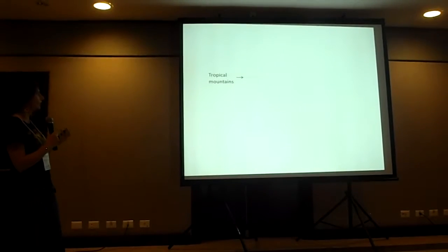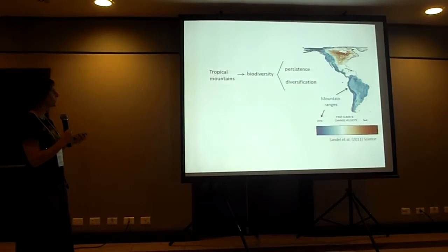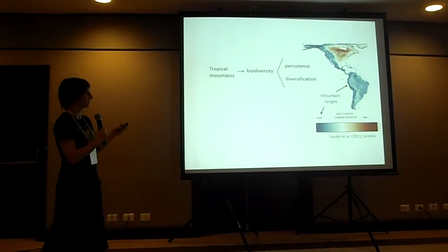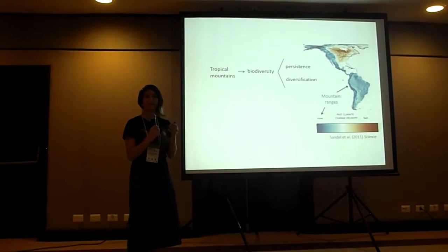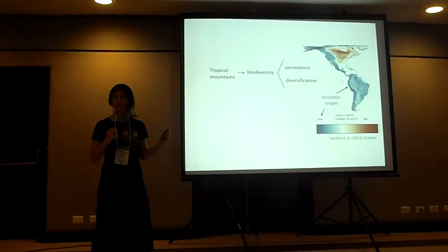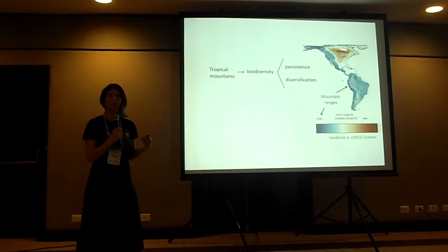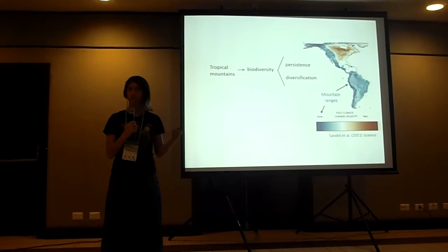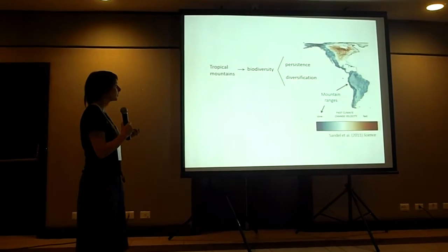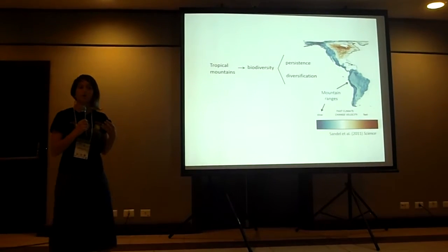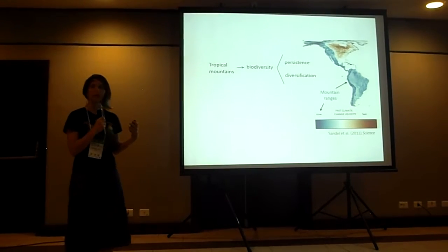So why tropical mountains? They are good for biodiversity persistence and diversification through time. We know this because they are important for species' persistence as areas of low climate change velocity. That means a change in temperature can be achieved within a short horizontal distance, whilst in places like northern North America and Europe, you need to perform a long latitudinal migration to get the same change in temperature. At the same time, mountains are important for diversification because they are areas with fragmented landscapes, making them good for promoting allopatric speciation.